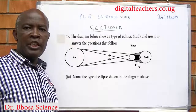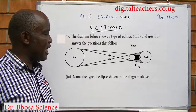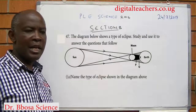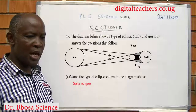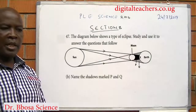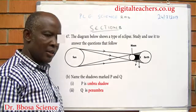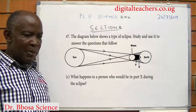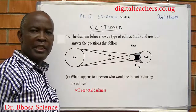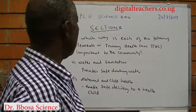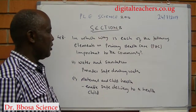Number 47: the diagram below shows a type of eclipse. Name the type of eclipse shown — that is a solar eclipse. Name the shadows formed at P and U: P is the umbra, total darkness. What happens to a person who would be at part X during the eclipse? They will see total darkness.